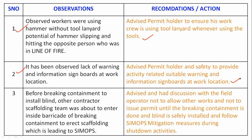Observation 2: It has been observed there is a lack of warning and information signboards at the work location. Recommendation: Advise the permit holder and safety team to provide activity-related suitable warning and information signboards at the work location.